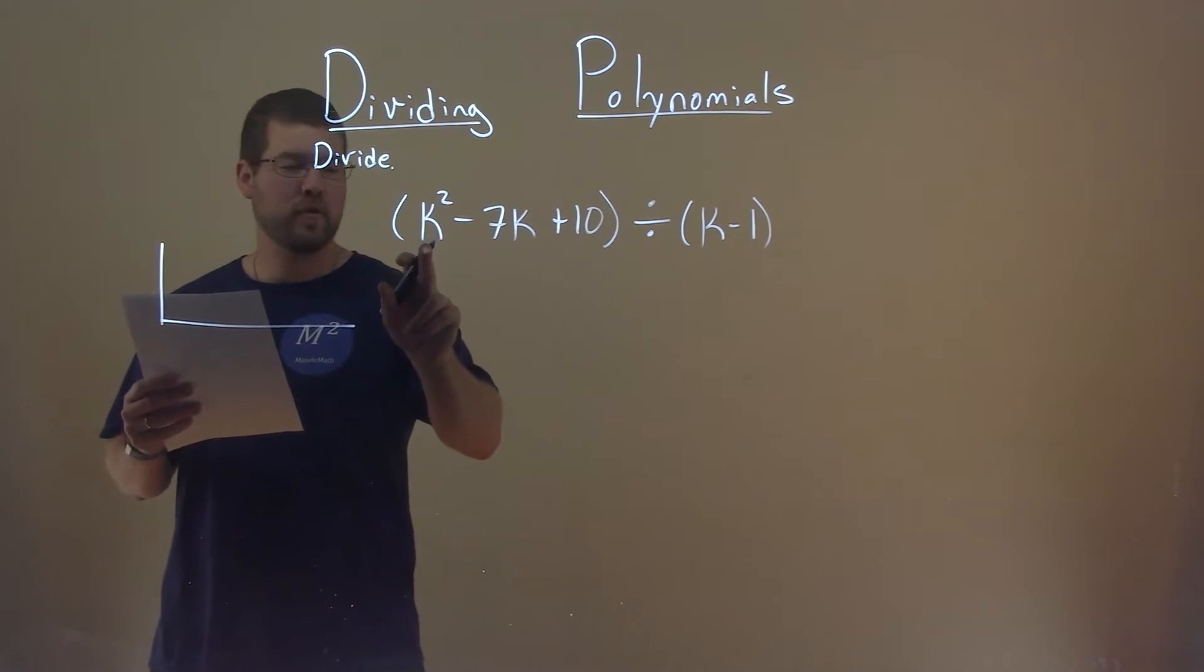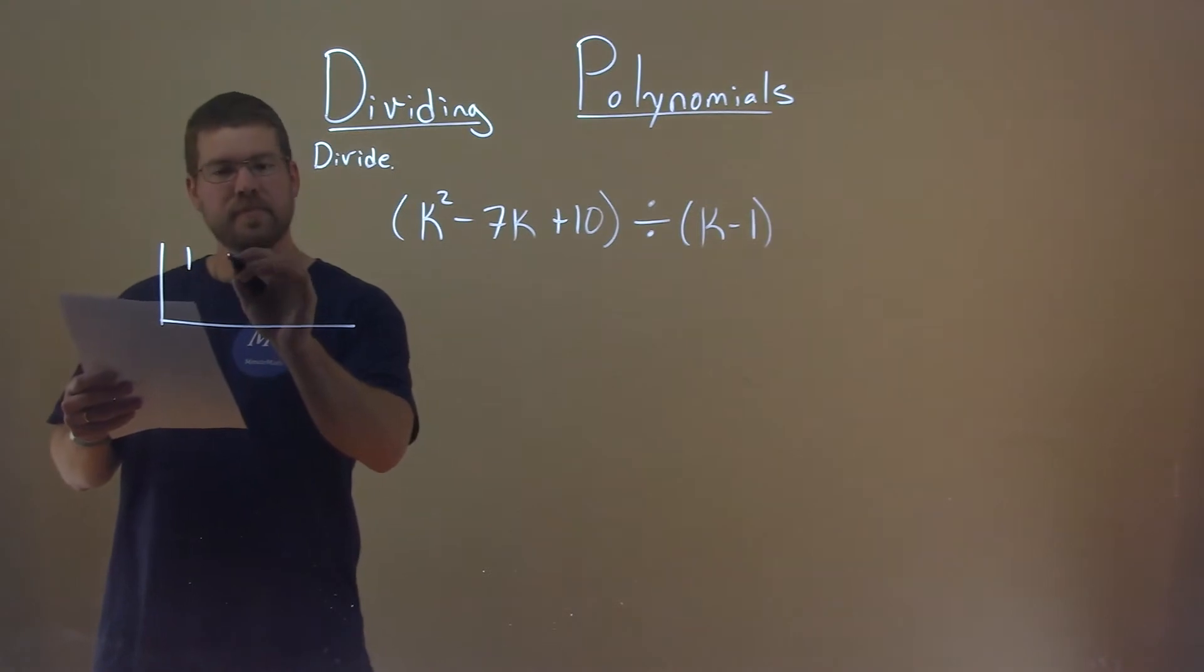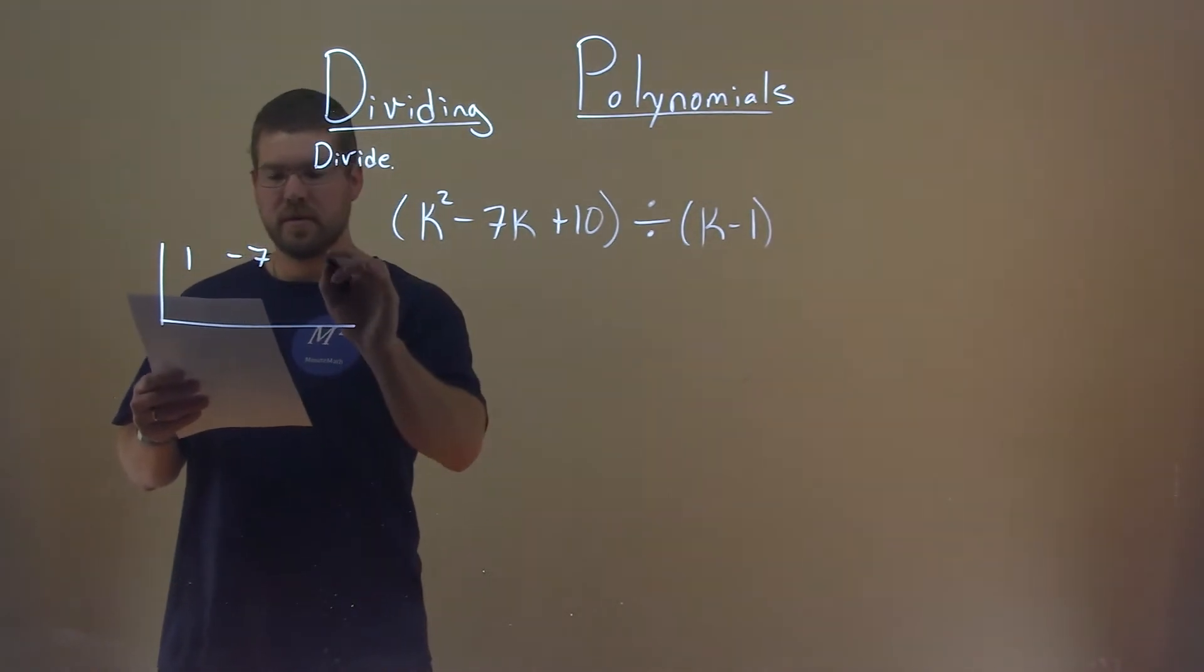Look at the coefficients of our first part. What's in front of k squared is a 1, in front of k is a negative 7, and the last constant is just a 10.